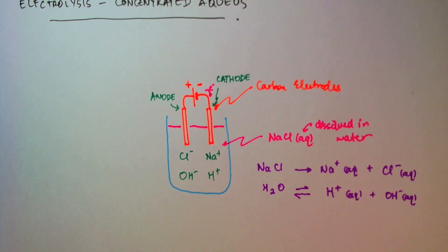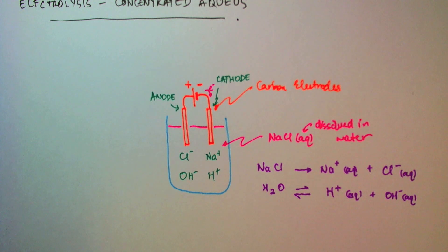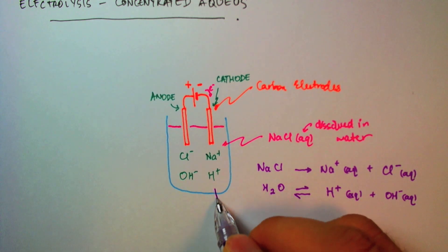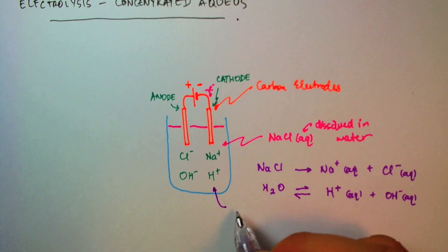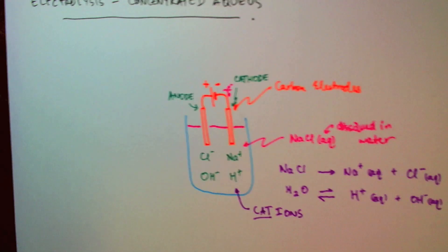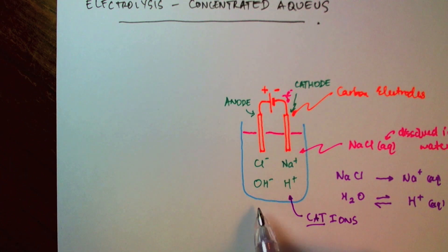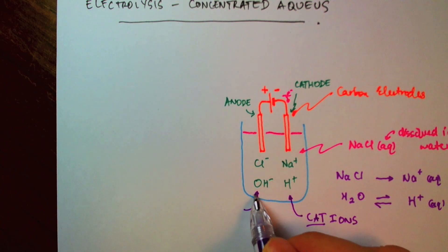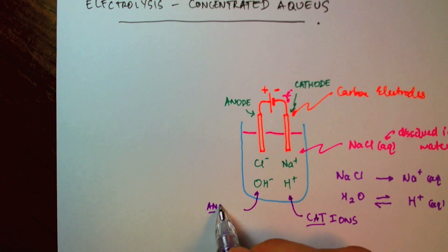Well, the answer lies in the reactivity series. But before we get to that, I would like to give my positive and negative ions a name. The positive ions are discharged at the cathode, and since they're discharged at the cathode, we call them the cations. While the negative ions are discharged at the anode, and since they're discharged at the anode, we call them the anions.